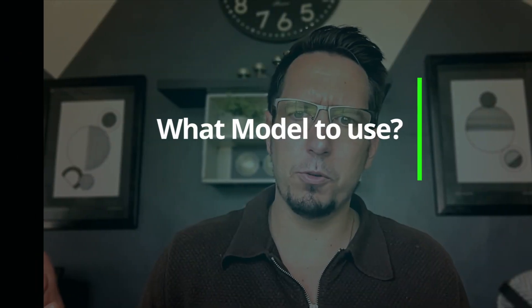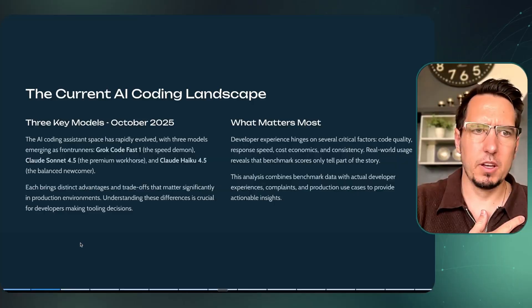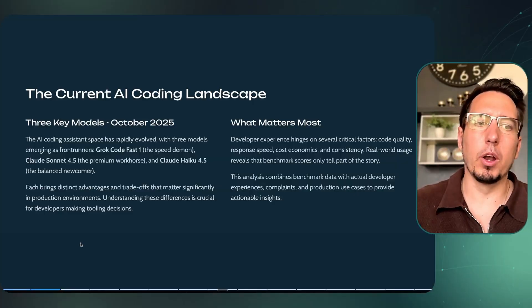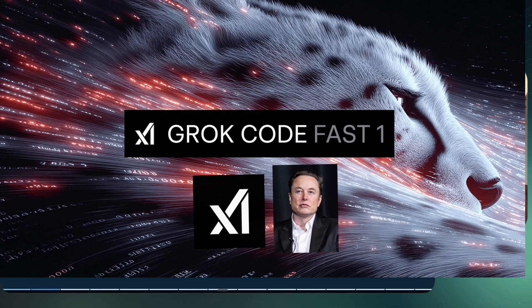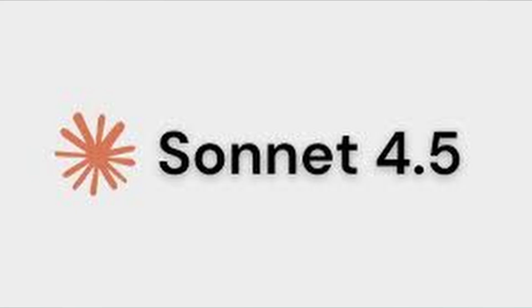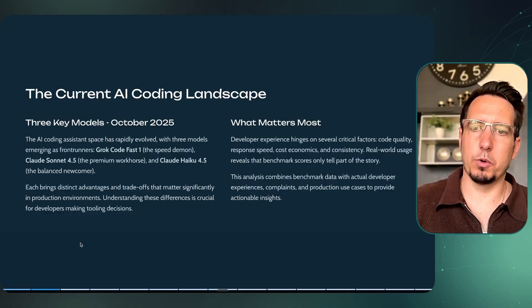Are you trying to determine what model to use and when you should use it — like Grok Code Fast, Anthropic Sonnet 4.5, and the new Haiku model that just dropped? If you're looking for answers, this video is for you. Let's jump straight to it. We're looking at three models: Grok Code Fast, made by xAI — that's Elon Musk — and then Anthropic's two models, Sonnet 4.5 and Claude Haiku 4.5 that just got released.